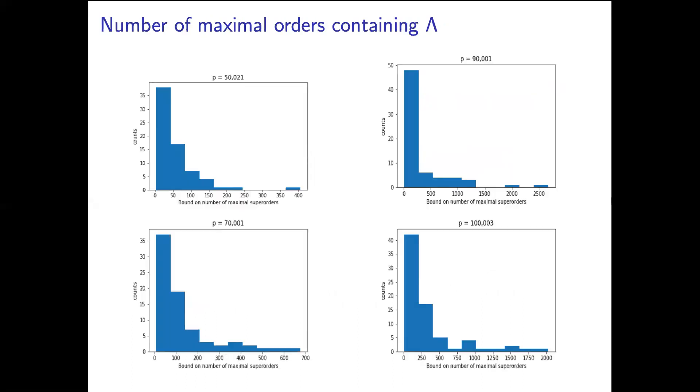Here I have the histograms for these experiments for the n(Λ). And so we can see that it seems like in each case this n(Λ) number is much smaller than it possibly could be. I mean sometimes it's very big here, but that seems pretty rare. So it seems like the enumeration step should be actually pretty efficient.